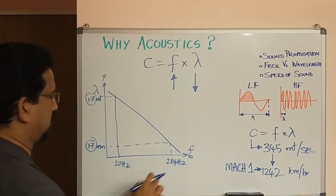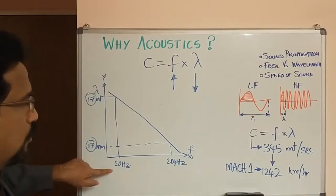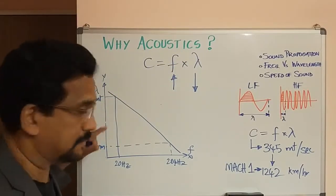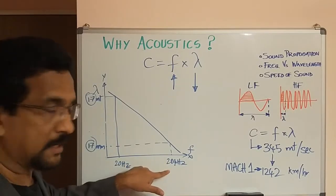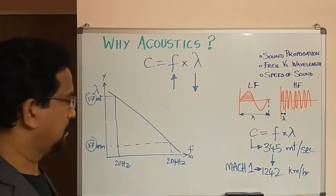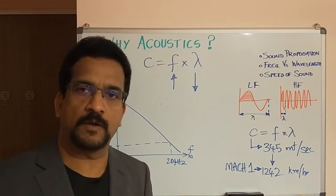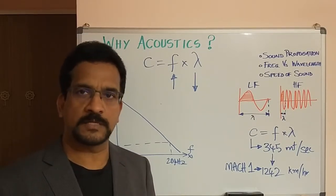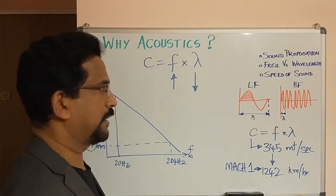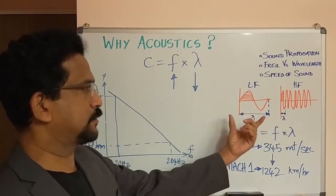Just remember: 20 Hz corresponds to a wavelength of 17 meters, and 20 kHz corresponds to 17 millimeters. When frequency is low, wavelength is high, and when frequency is high, wavelength is lower. These facts are very important when studying room acoustics, where we relate wavelength to the size of rooms.